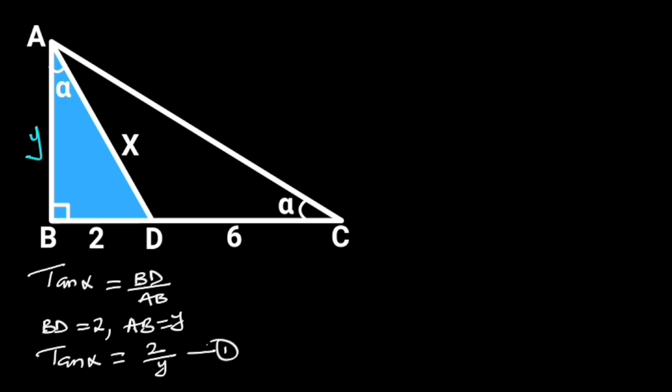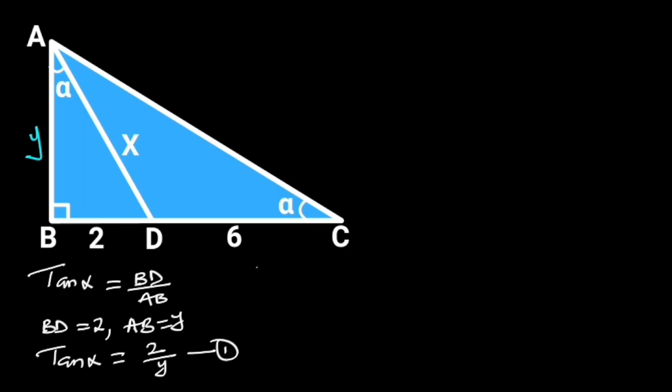Next, let's focus on triangle ABC. Triangle ABC is a right triangle. Similarly, from trigonometric ratios, tan alpha is equal to AB over BC.